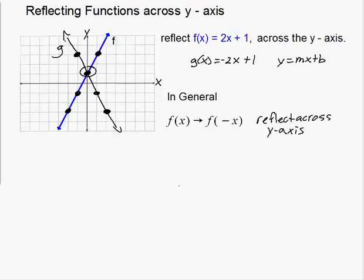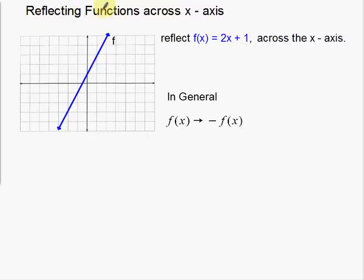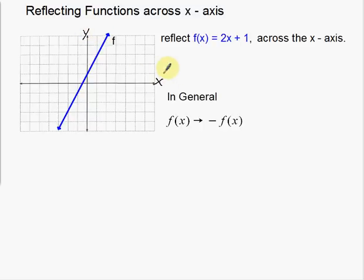So now I'm going to flip to my next slide. What I'm going to do is reflecting functions across the x-axis. This one is just a little bit different from the last one, and we're going to compare to see how they're different. We're still taking that same function — f of x equals 2x plus 1 — and I'm going to reflect it across the x-axis. Here's my y-axis from before, and here's my x-axis — the new line of reflection. Basically, the top part of the line is going to reflect to the bottom.